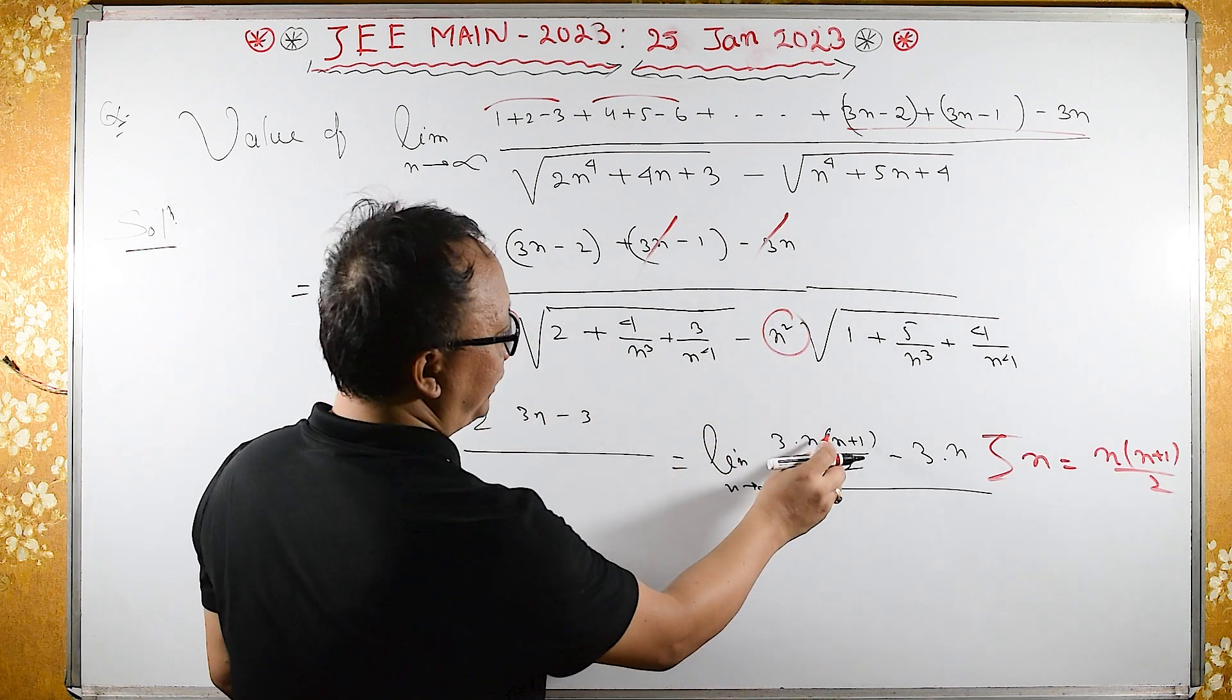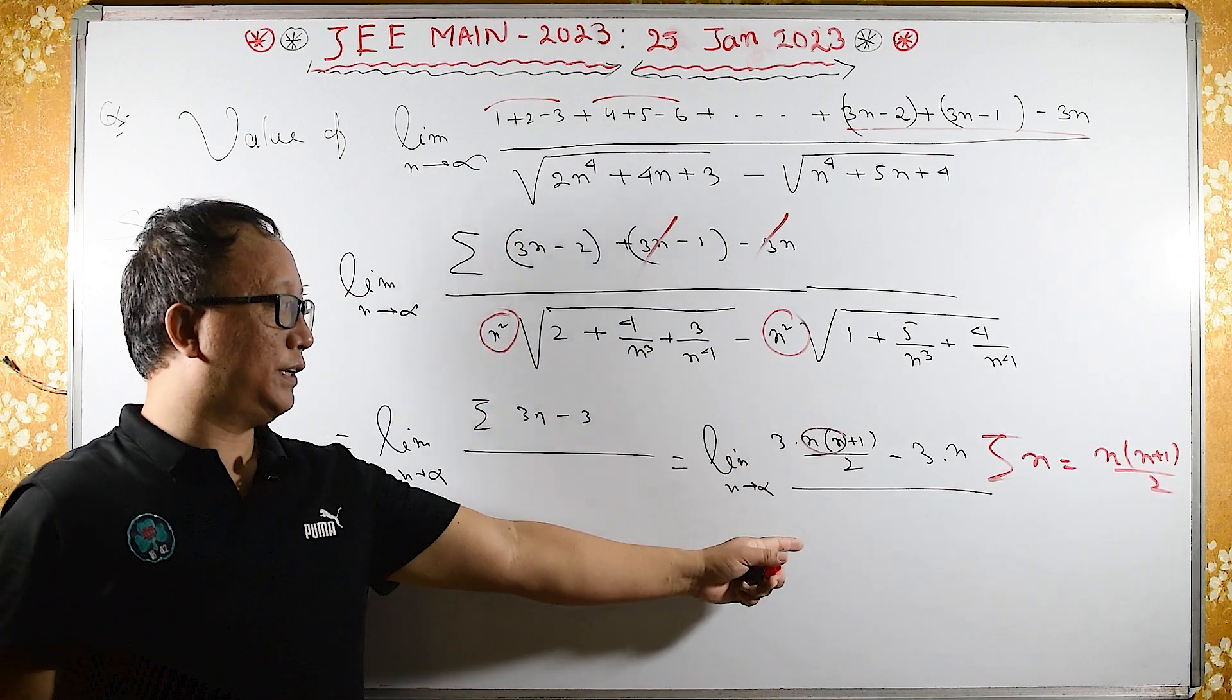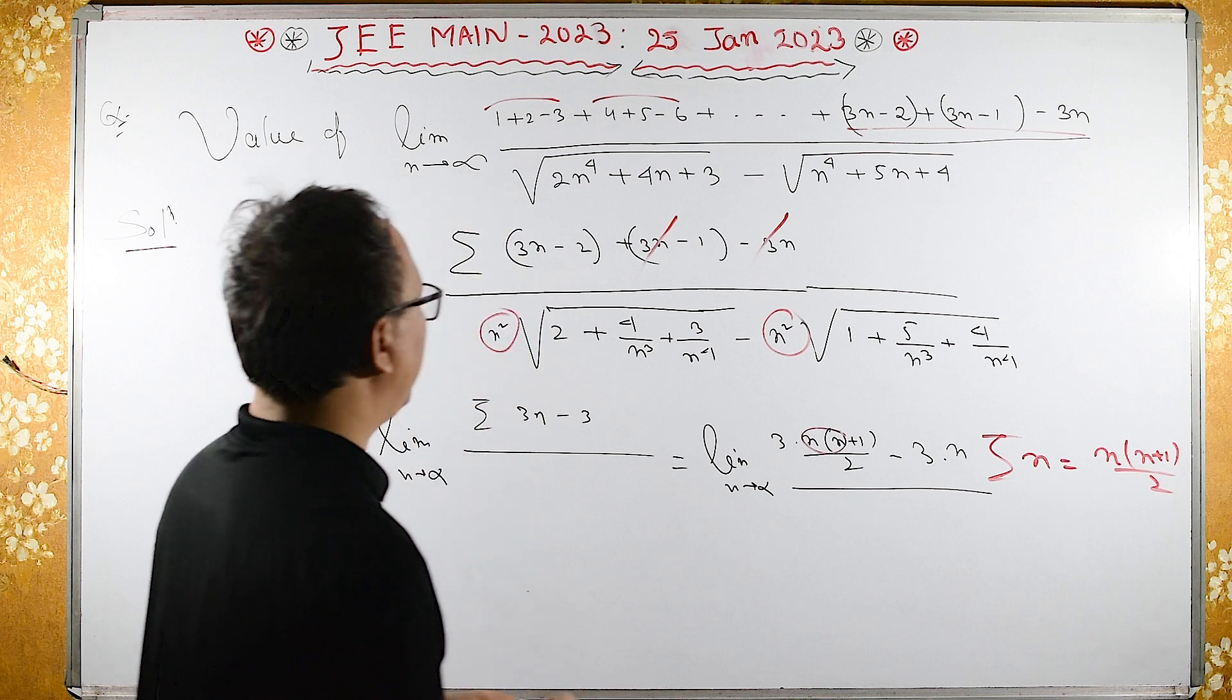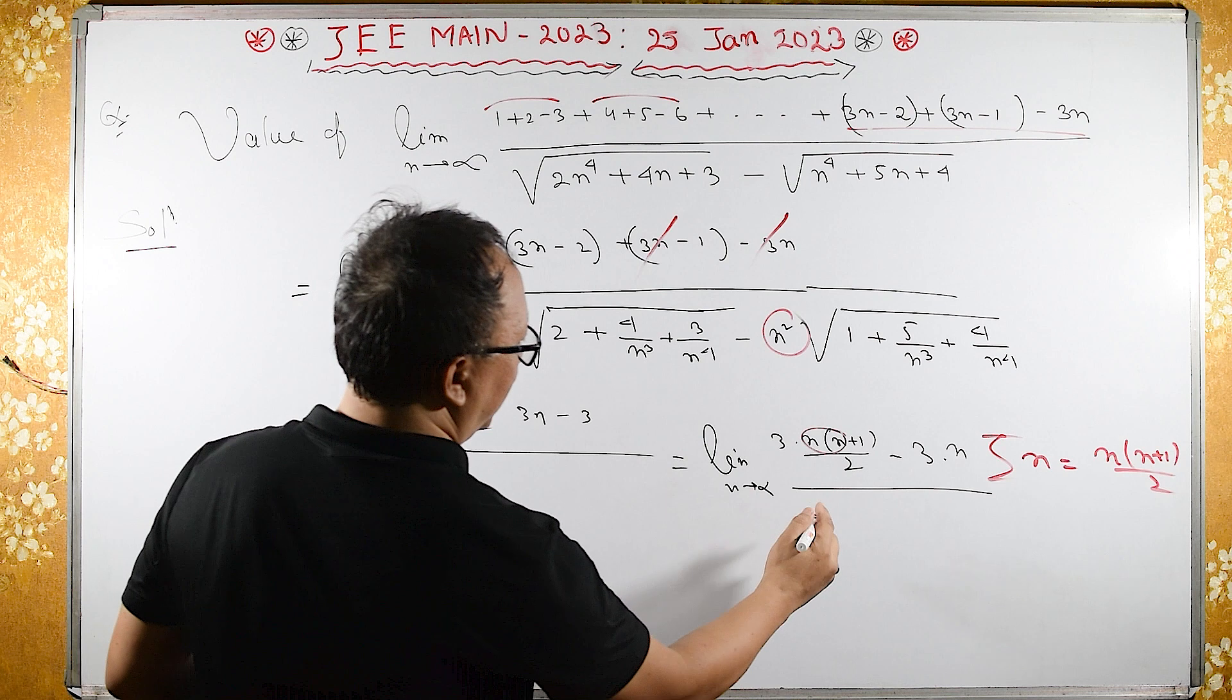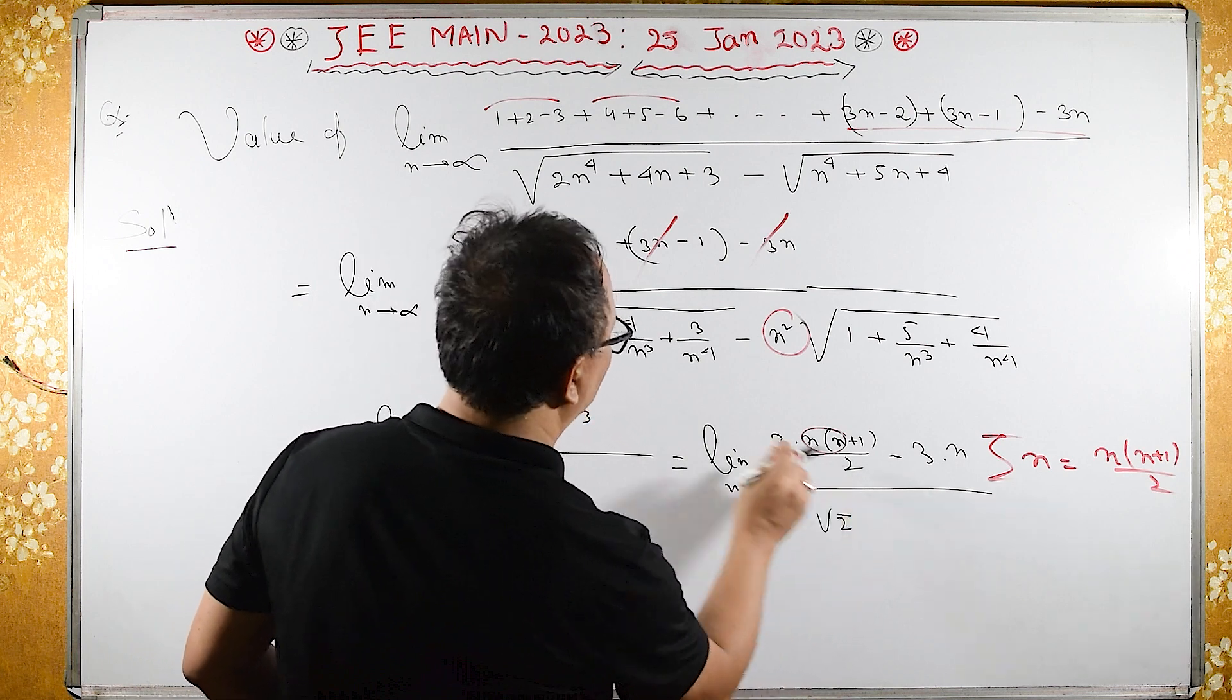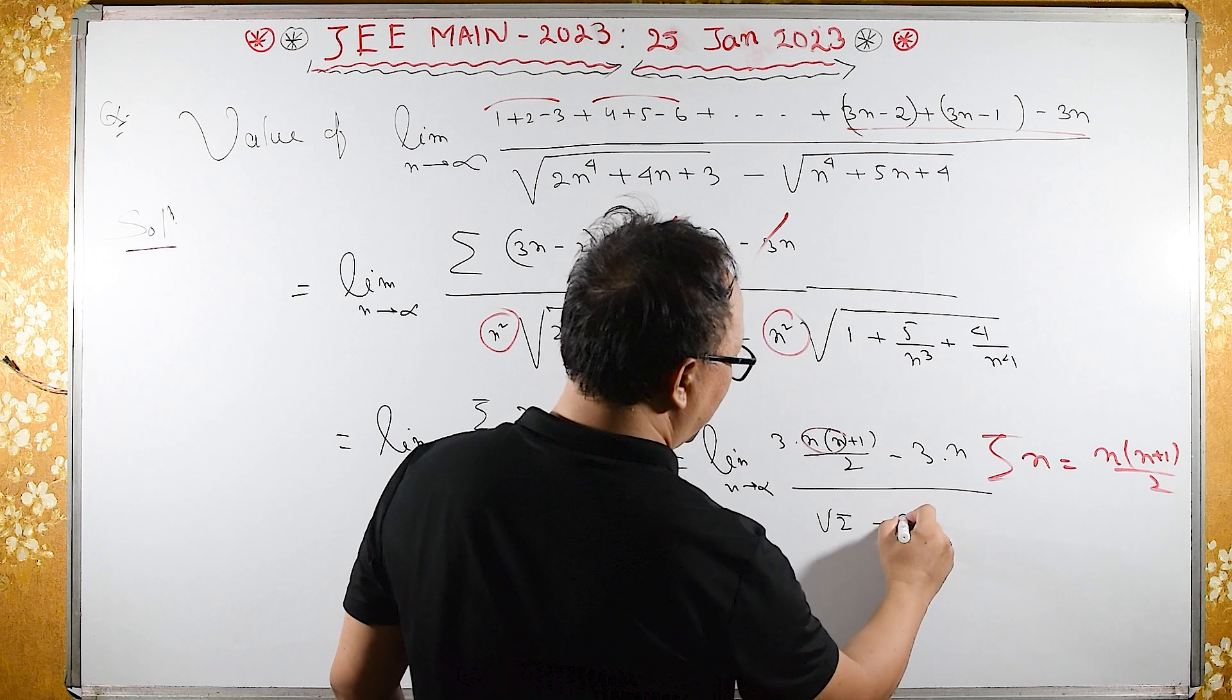In the denominator also we have, here, n into n is n square, so it is already formed infinity over infinity. So, when n tends to infinity, what we will have is, we have, we will have only root 2, here we will have only root 2, whole become, other become 0, and then minus square root of 1 is 1.